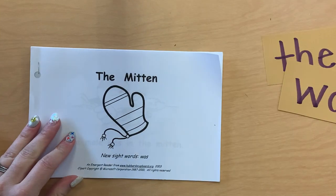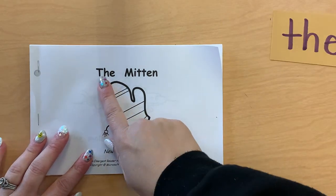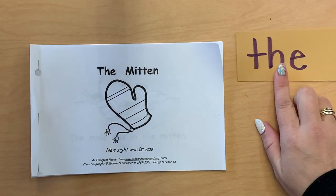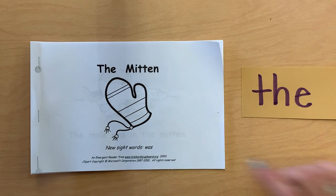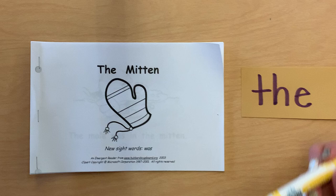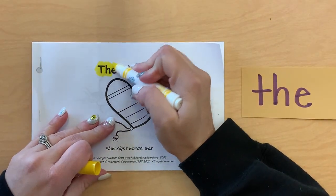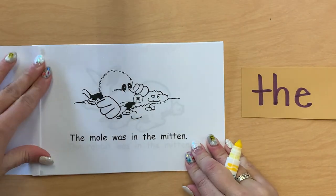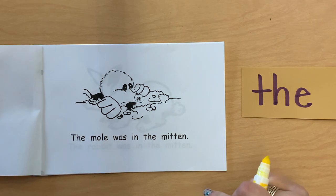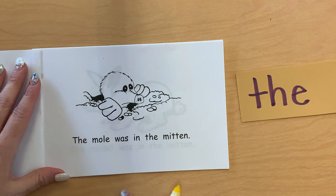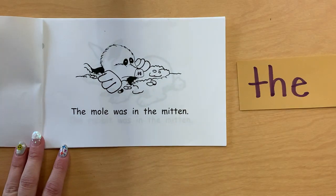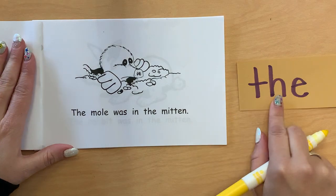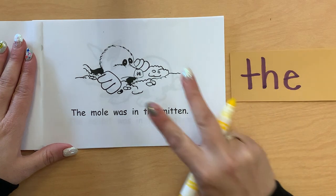So we have our story, which is called The Mitten. And first we're going to be searching for the word 'the.' Now each time we see the word 'the,' it's actually going to be on our page two times, but it's on the front just once. So for 'the,' we can highlight it today. Let's find the word 'the.' It says: the mole was in the mitten. And we're looking for the word 'the' — it's going to be there two times.